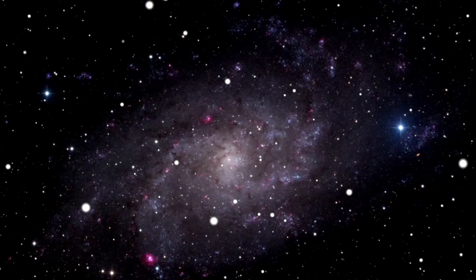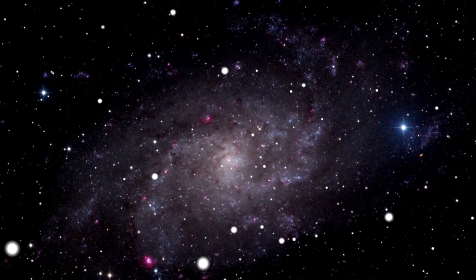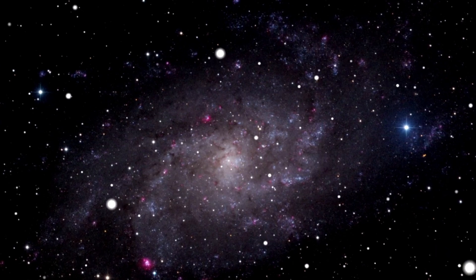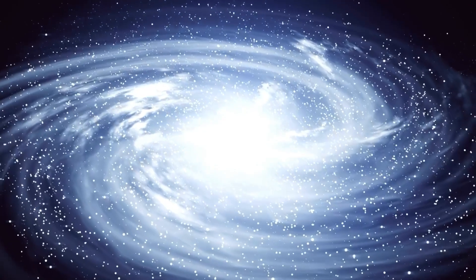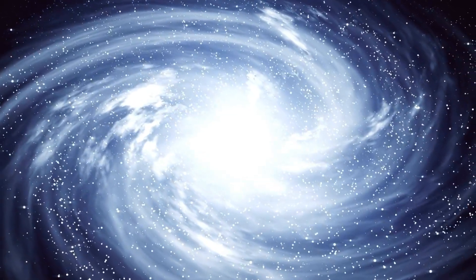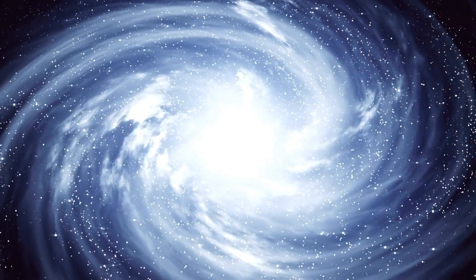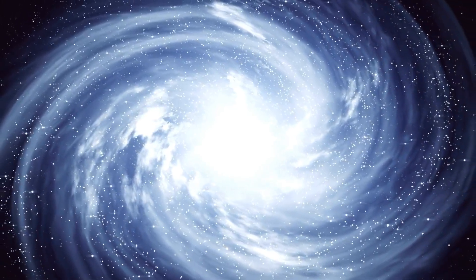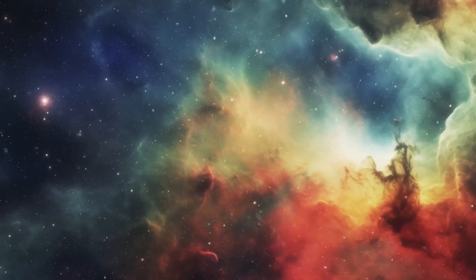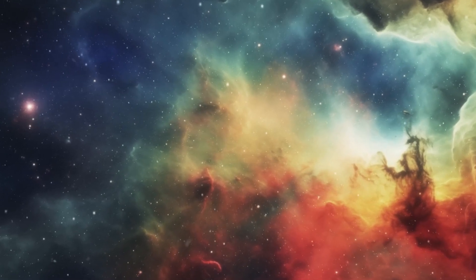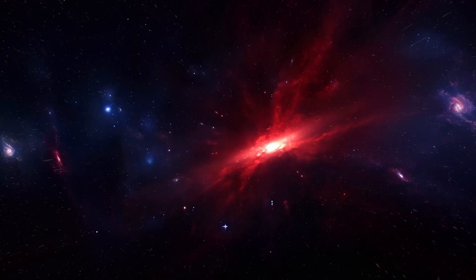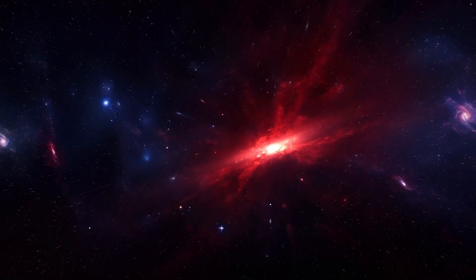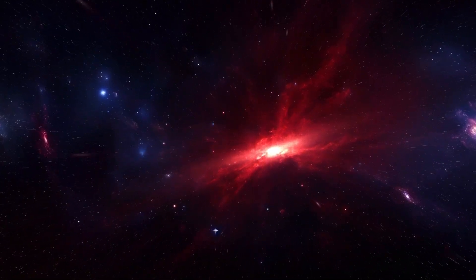A supernova is a brilliant explosion that happens when a star dies, and it is not harmful to life on Earth. The brightness of a supernova depends on the size of the star that explodes. Betelgeuse's supernova would be extremely bright, akin to the light of a half-moon, and visible during the daytime. However, the brightness of a supernova would also pose a challenge for astronomers, as the explosion could obscure the view of other stars and planets, making it difficult to study the night sky.